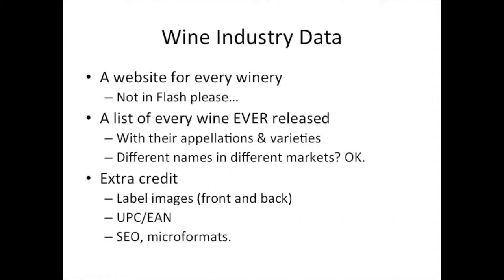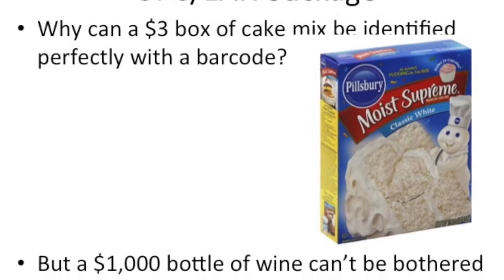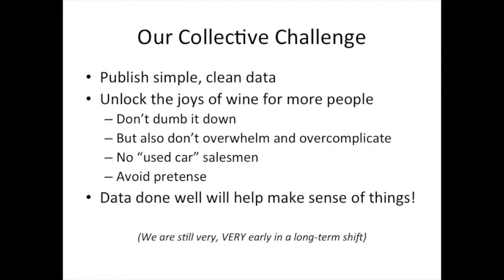So what do we all need to do? Data. Simple. Details. Every winery in the world should have a website — no Flash — just a list of their wines, appellations and varieties. If you have the same wine in different markets with different names, put that there. And why is it that a $3 box of cake mix can do UPC perfectly, but wine at $1,000 a bottle insists on using the same UPC vintage over vintage, as if they're exactly the same product? They are different products. We are bungling data. Clean, simple data enables CellarTracker, Vivino, and the next 20 amazing things to come along and help float our boat. Data done well is going to help let more people into this wonderful world of wine. We are very early in what I think is a very big shift that's going to continue over the next 20 to 30 years.